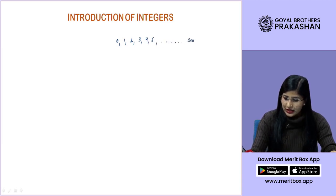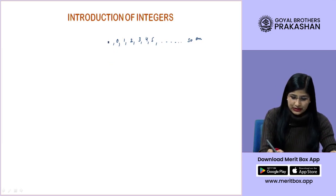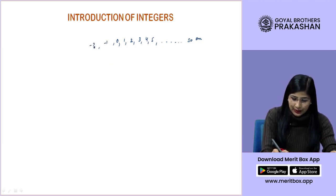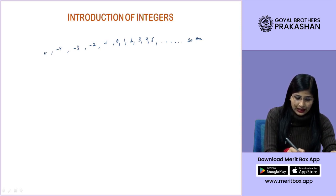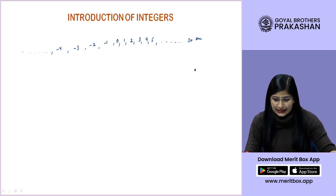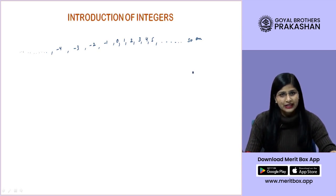...also includes the negative of these counting numbers that is minus 1, minus 2, minus 3, minus 4 and so on. As the counting is endless, there is no greatest integer.